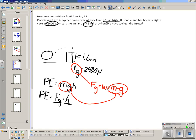So let's go ahead and plug in our values. We have 2,400 newtons times 1.6 meters, and that gives us 3,840 newton meters.